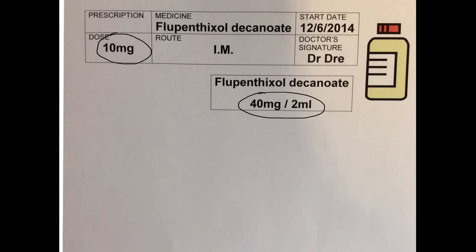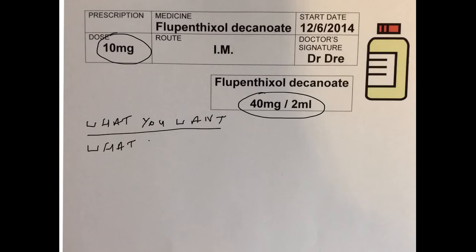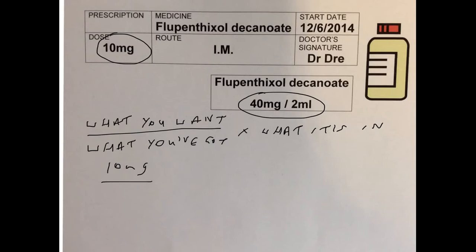We use the formula: what you want over what you've got, times what it's in. What you want is 10mg, over what you've got — 40mg — that's 40mg per 2ml.